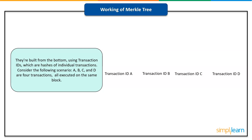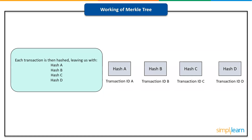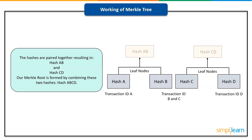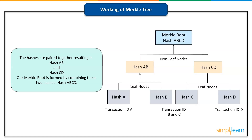Here's an example of a Merkle tree to help you understand the concept. Consider the following scenario: A, B, C, and D are four transactions, all executed on the same block. Each transaction is then hashed, leaving us with Hash A, Hash B, Hash C, and Hash D. Now the hashes are paired together, resulting in Hash AB and Hash CD. A Merkle root is then formed by combining these two hashes into Hash ABCD. In reality, a Merkle tree is much more complicated, especially when each transaction ID is 64 characters long, but this should give you a good concept of how the algorithms work and why they are so effective.